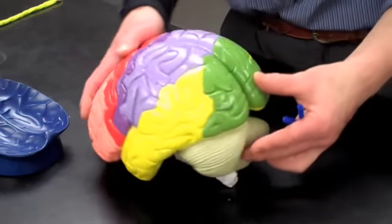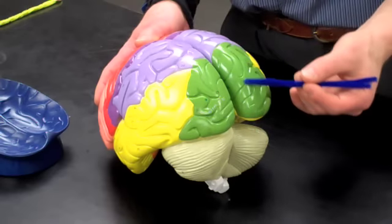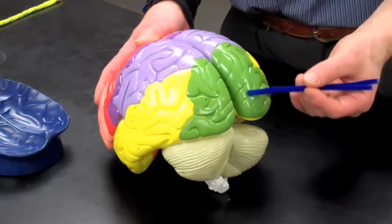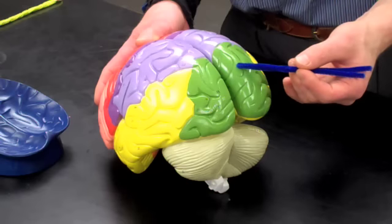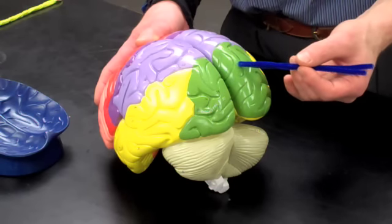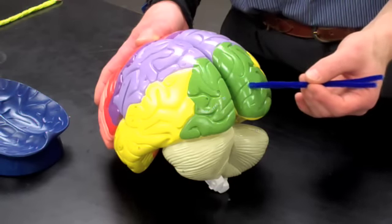When we go to the back, we have a green lobe and that is the occipital lobe. And that is the conscious visual lobe. So we see the pictures consciously back here.